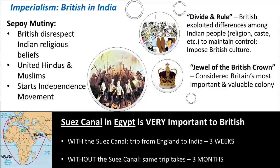Because the Sepoy soldiers absolutely believed the cartridges were covered in cow and pig fat, this was a moment where the anger of both Hindus and Muslims toward the British was greater than their anger toward each other. So suddenly you have Hindu and Muslim soldiers willing to work together to fight the British. This rebellion spread throughout a big chunk of India with a lot of violence, but the mutiny was not successful.